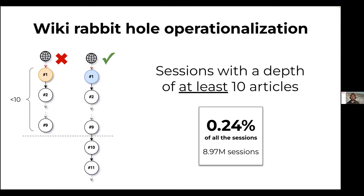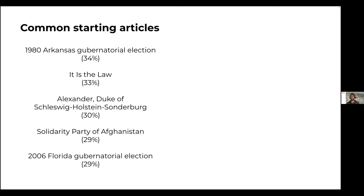How do we recognize rabbit hole sessions? There are multiple possibilities, but in our analysis we consider a fall into a rabbit hole when the depth of the session is at least 10 articles. By applying this rule we retain around 0.24% of all the original sessions. As the title of the paper suggests, we are exploring the long tail of the navigation sessions. Let's see some of the properties of these long sessions.